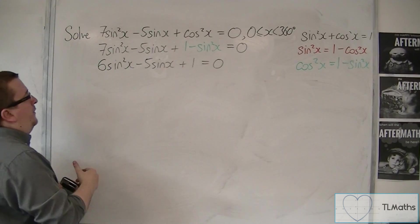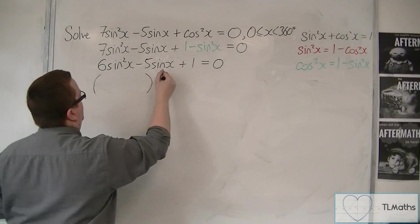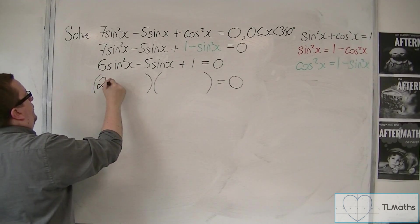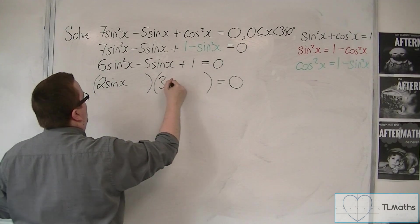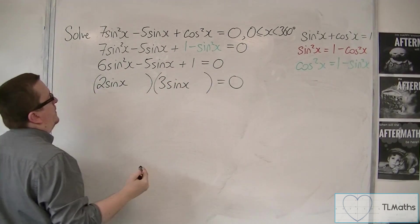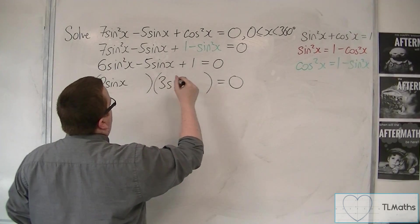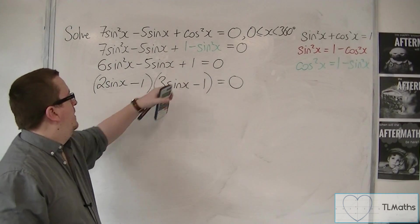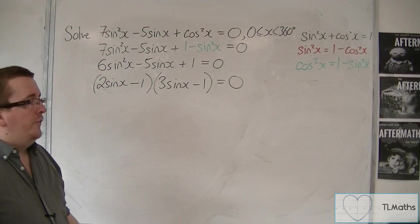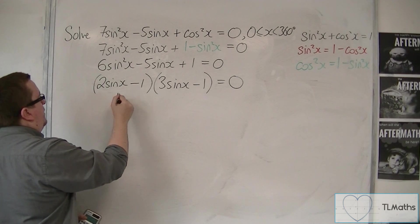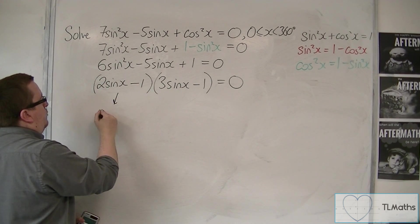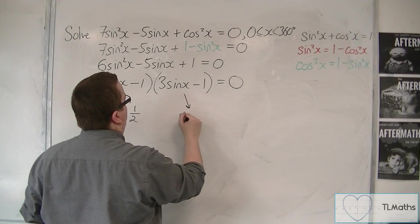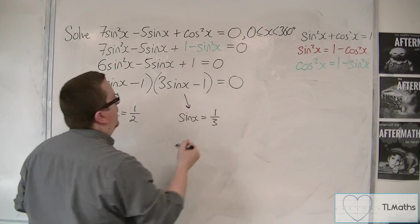This quadratic factorizes. We would have 2sinx and 3sinx in there, with minus 1 and minus 1 to make the +1 and -5sinx. So either this bracket is 0, in which case sinx = 1/2, or this bracket is 0, in which case sinx = 1/3.